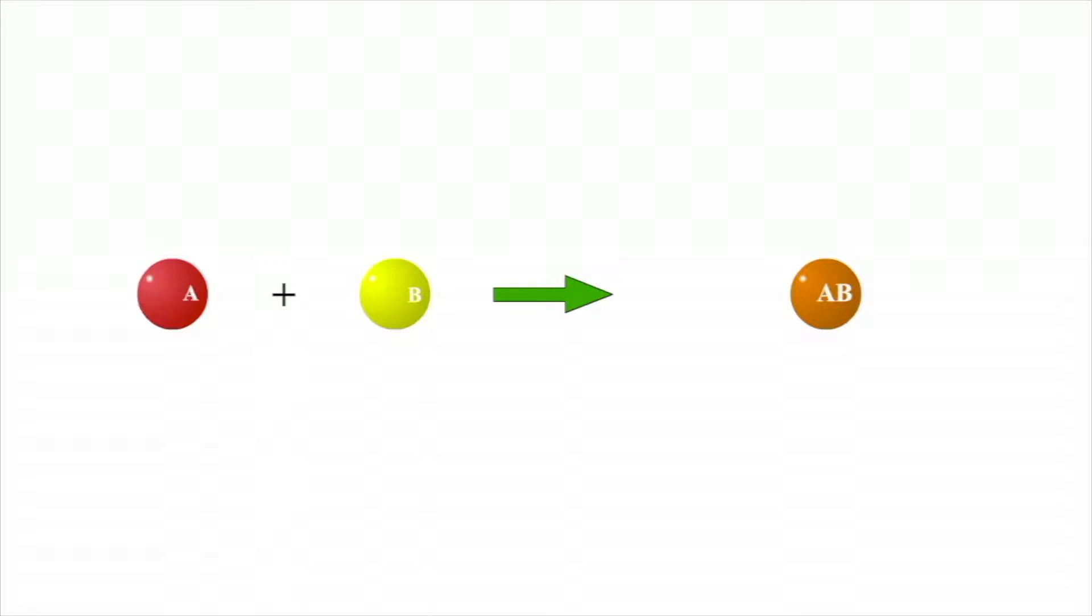The equation of a chemical reaction shows the chemical formulas of reactants and products. Reactants are on the left side and the products on the right. A plus sign between either reactants or products indicates that two or more separate substances are involved in the reaction.